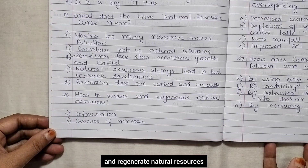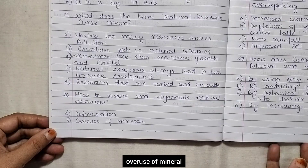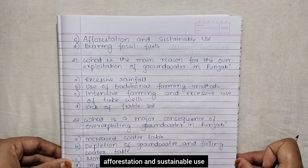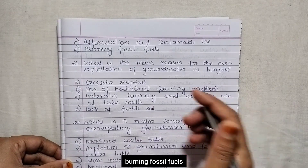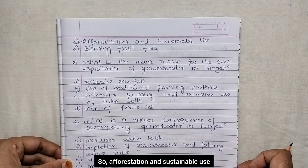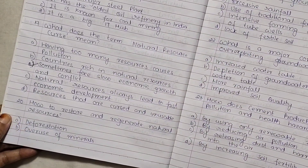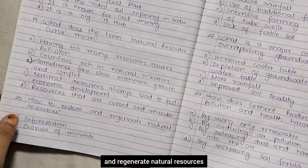How do we restore and regenerate natural resources? The options are deforestation, overuse of minerals, reforestation and sustainable use, burning fossil fuels. Reforestation and sustainable use is the way we can restore and regenerate natural resources.